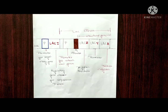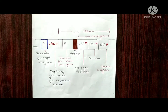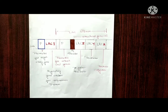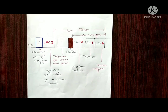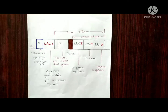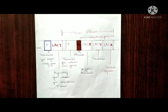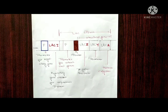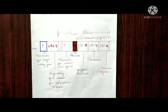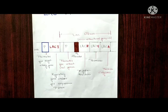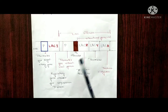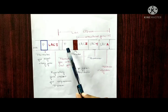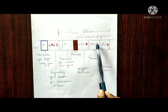The lac operon model shows how gene expression is regulated in E. coli. Lactose is a complex sugar, and when hydrolyzed, it breaks into two simple sugars: glucose plus galactose. In the lac operon, the structural genes lacZ, lacY, and lacA share a common promoter and work cooperatively for gene expression.